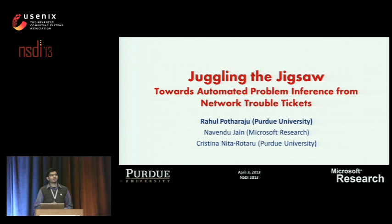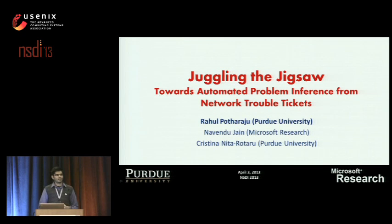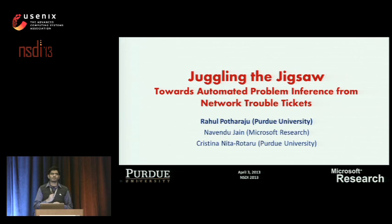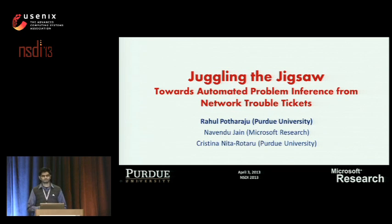Today I'm going to present our work on analyzing network trouble tickets to improve network management. There were two motivations behind this effort. First, when a failure occurs, the focus is on fixing it quickly and moving on to the next one without understanding the big picture of failure trends. Thus, we want to analyze these network trouble tickets to uncover big problem trends. Second, we want to learn from our mistakes to improve network management. This is joint work with Naveendu from Microsoft Research and my advisor Christina from Purdue.